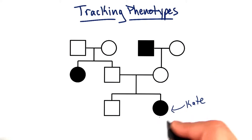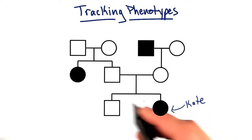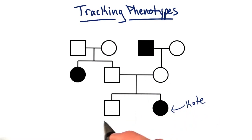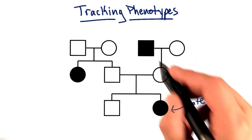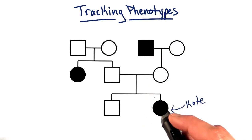So here we see Kate, and she's affected because we see that her circle is filled in. We see her parents are unaffected because they're not shaded. Her brother is not affected because he's not shaded. But her maternal grandfather is affected because his square is shaded.